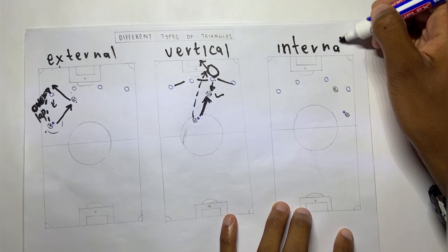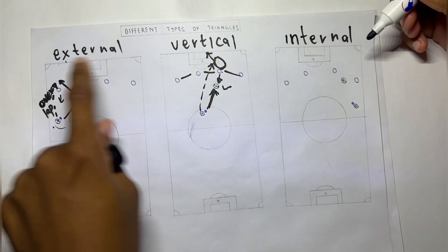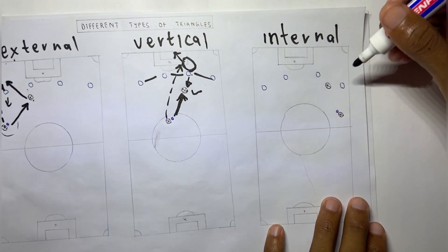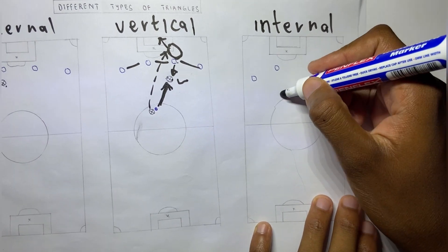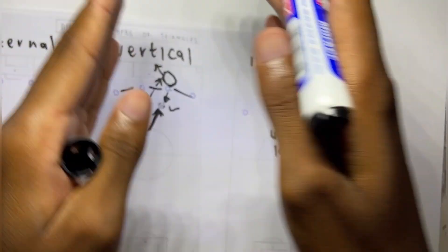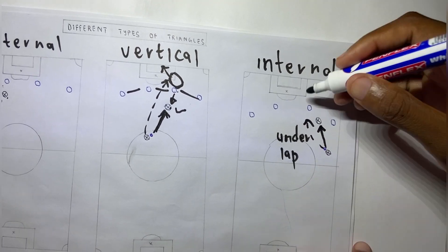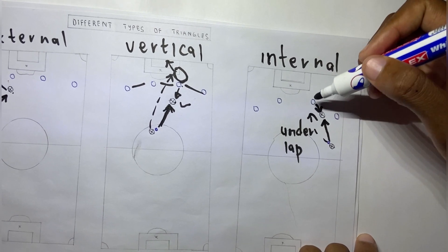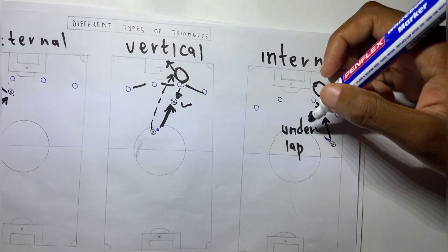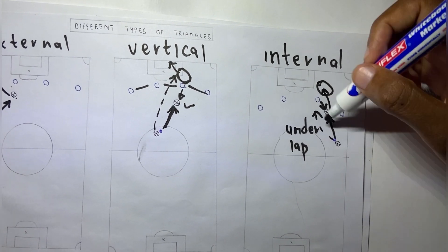The last triangle is the internal triangle. It is not that different from the external triangle — the only difference is the type of run made. In the external triangle there was an overlapping run, whereas in the internal triangle we experience an underlapping run, meaning the player takes the triangle towards the goal post. After passing the ball, the teammate drags out the opposition player, creating space in the defensive line, and the first player makes an underlapping run to receive the pass back in that space.